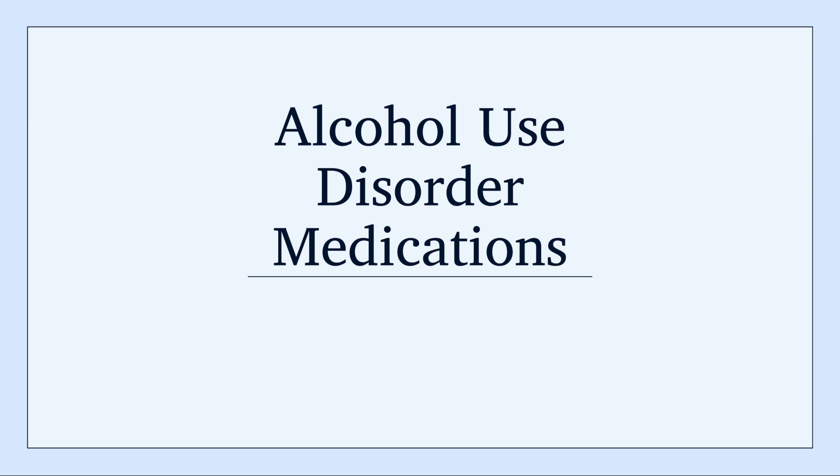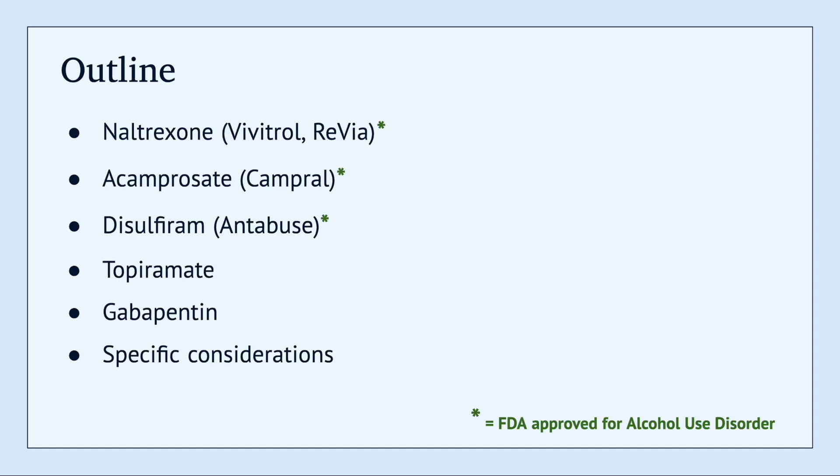Hey everyone, this video is going to summarize the different medications available for alcohol use disorder. We're going to talk about a few different drugs. These include naltrexone, acamprosate, disulfiram, topiramate, and gabapentin. The first three options are the ones that are actually approved by the FDA for alcohol use disorder.